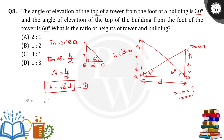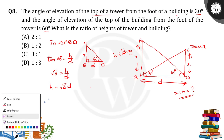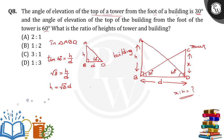Taking this as equation number 1: H equals root 3 times D. Instead of expressing in terms of H, we can take it in terms of D. From this we can write D equals H by root 3, taking as equation number 1.